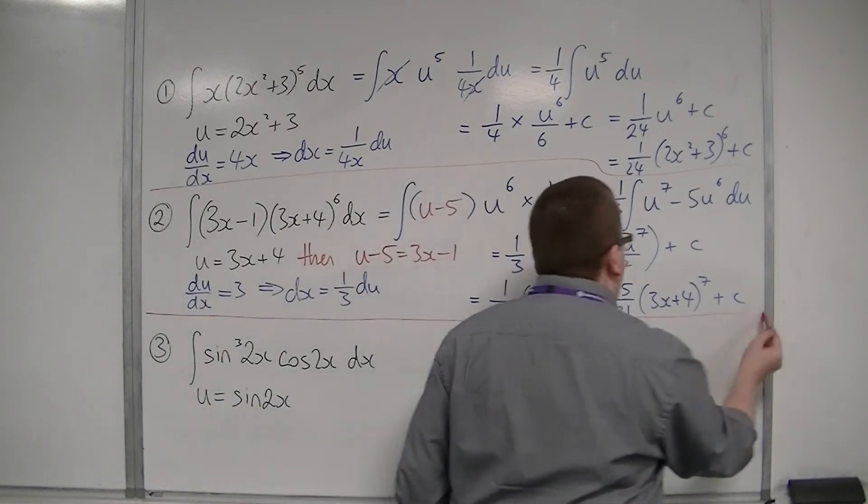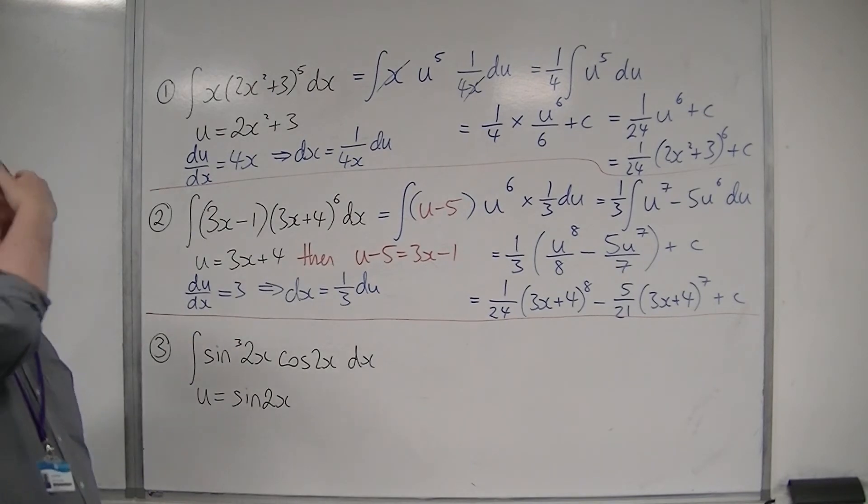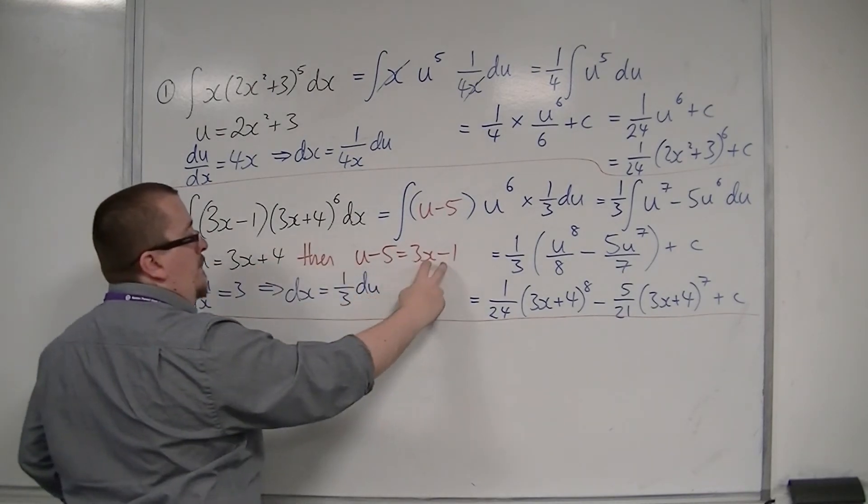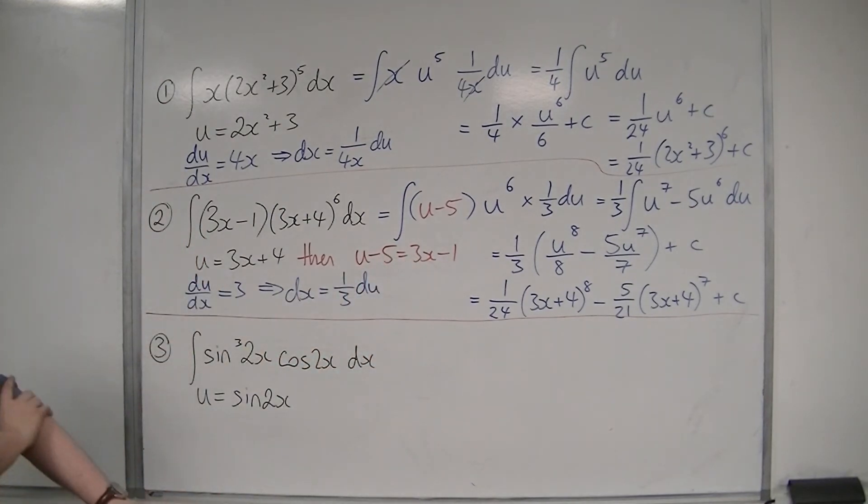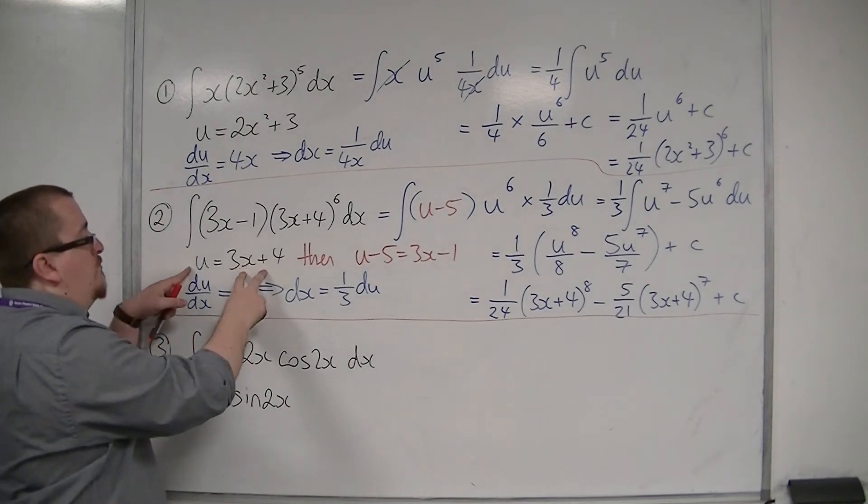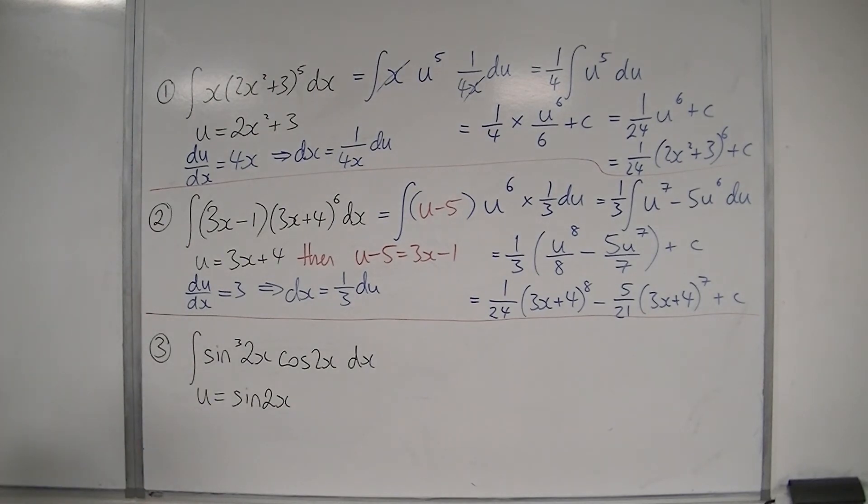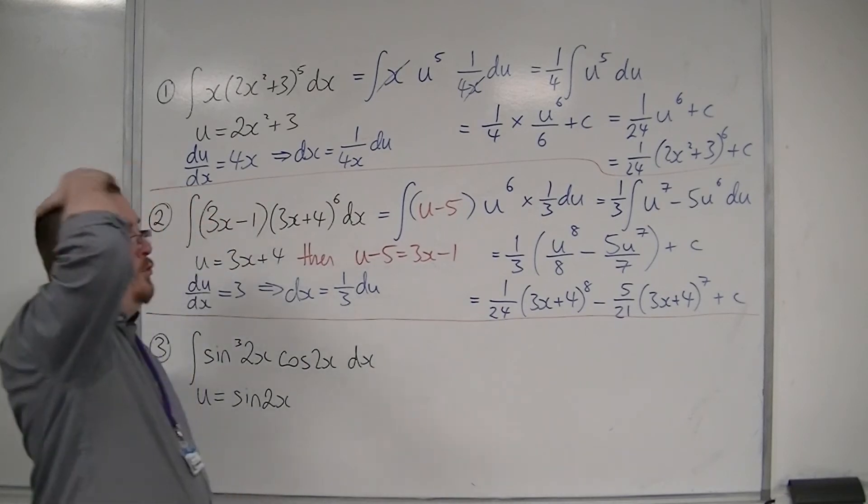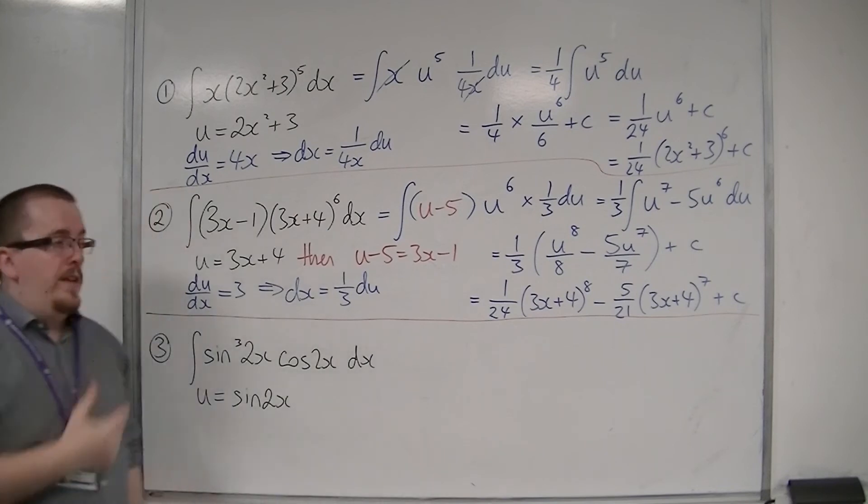So the technique that was different and new to us there was this bit in red. It's all about getting that 3x-1, what would I have to make u to get there? So I knew that I could look at that and go, right, I need to subtract 5 from both sides to get the 3x-1. So I'd have u-5. Now, with that answer, you could potentially be able to factorise this, but at this stage, I'm going to leave it where it is.